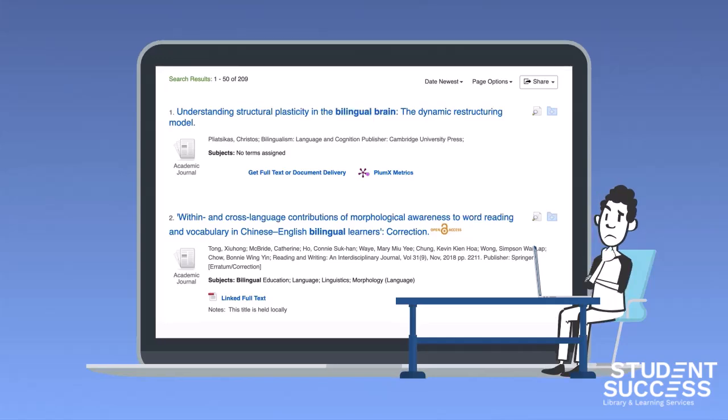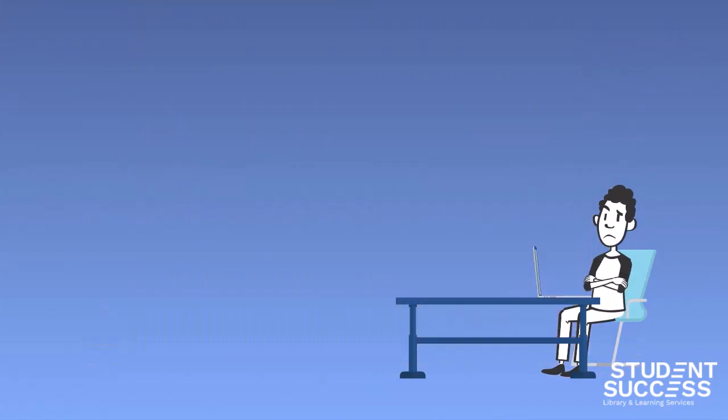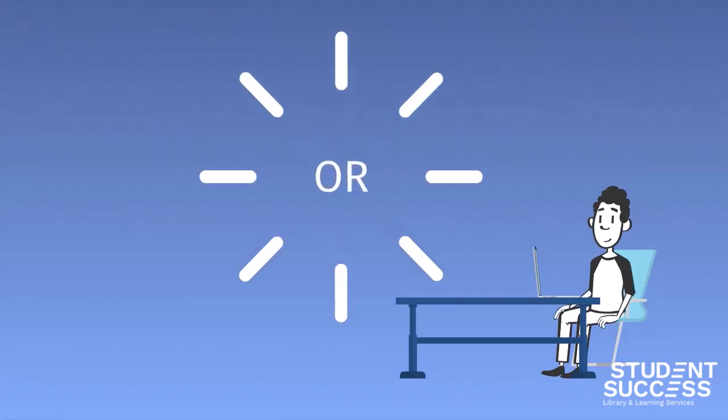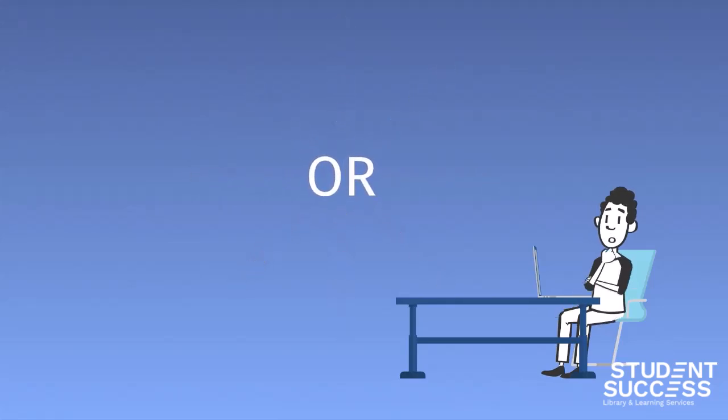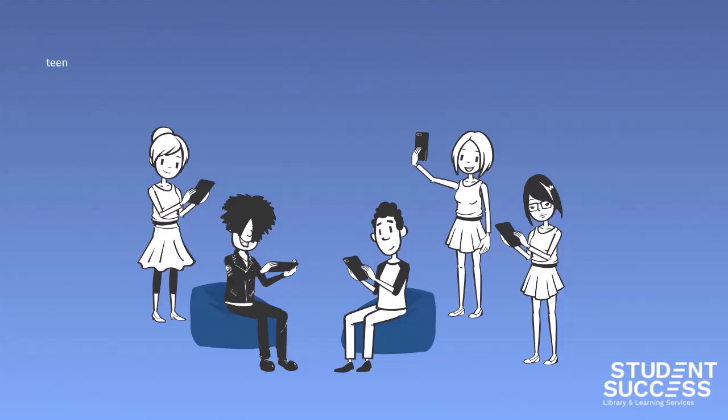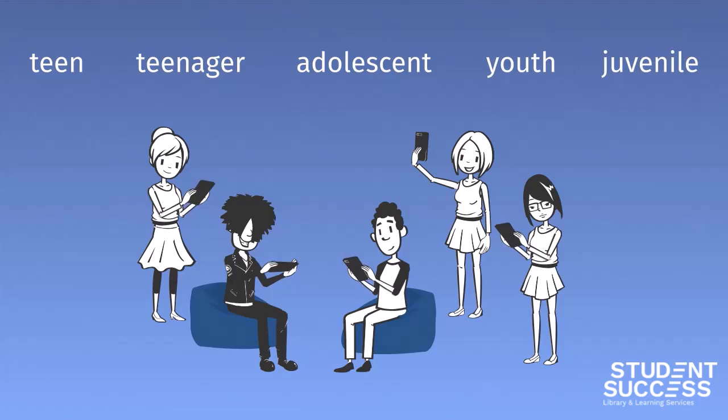Library databases also use another important word to combine key terms, and that word is the magical OR. OR can add so much to your search. As you know, there are many different terms you can use for the same idea or concept. You can use OR to include those other words, words like synonyms, related words, and examples.